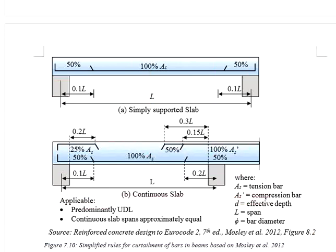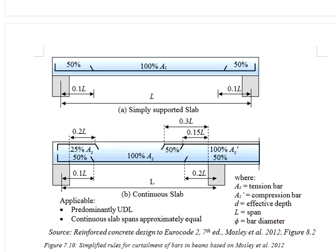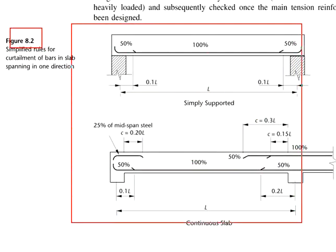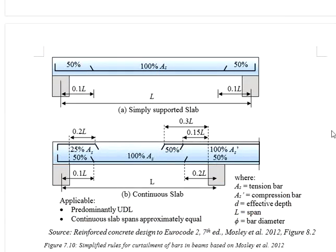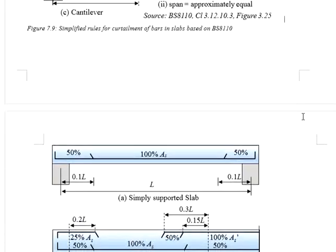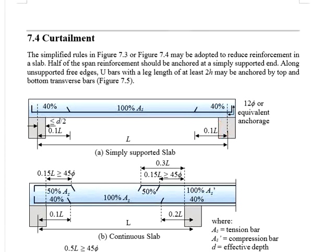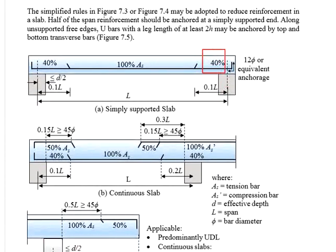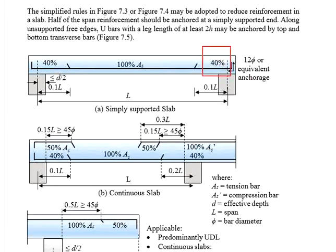If you read references for reinforced concrete design, there is another set of simplified rules for curtailment, slightly different from the British Standard. This is adopted from the seventh edition of 'Reinforced Concrete Design to Eurocode' by Bill Mosley and others (2012), Figure 8.2. Comparing with the British Standard for the simply supported slab, the curtailment rules are more or less the same — curtailment at 0.1 times the effective length. The only difference is the remaining amount of reinforcement: the reference recommends 50% remaining, whereas the British Standard recommends 40% remaining.